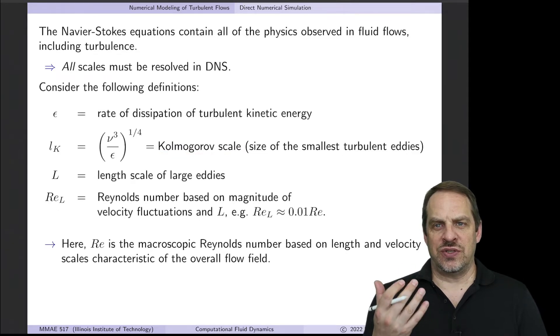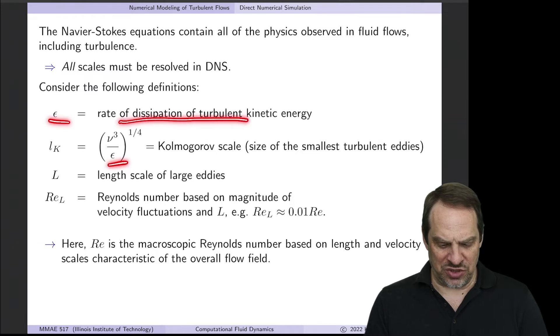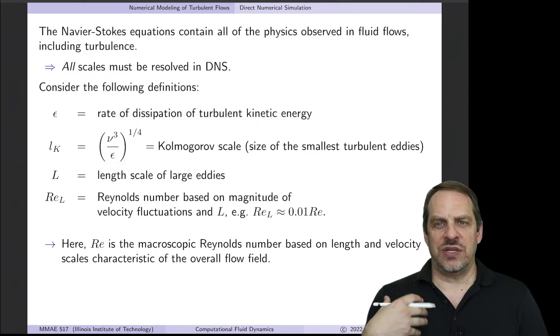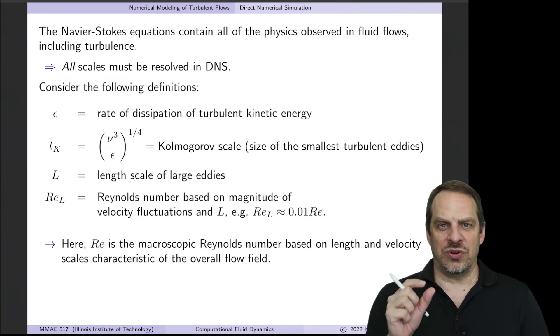From a dimensional analysis, you can determine the result that the smallest scale eddies, the Kolmogorov scale, is going to be ν³/ε to the one-fourth. ν is the viscosity of the fluid. ε, again, is the rate of dissipation of turbulent kinetic energy. That gives you the order of the size of the smallest eddies that we need to resolve in order to capture turbulence.